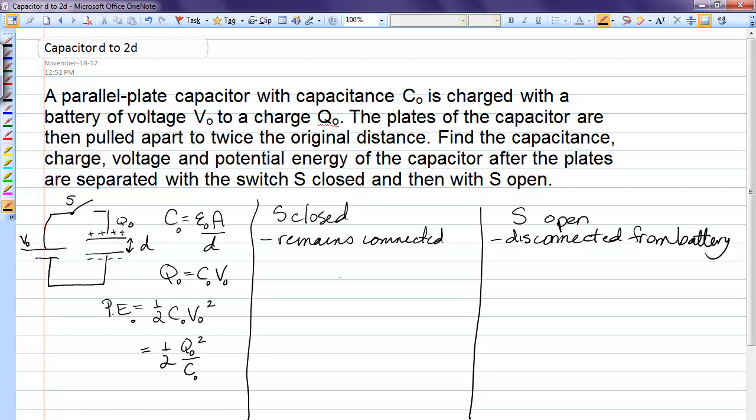So, now let's pull these plates apart and leave it connected to the battery. So, now we've got the same area of the plates, but now the plate separation is double. So, what happens to capacitance? The capacitance, epsilon naught and A stay the same, but instead of D, now we have 2D, which is exactly one half the original capacitance.